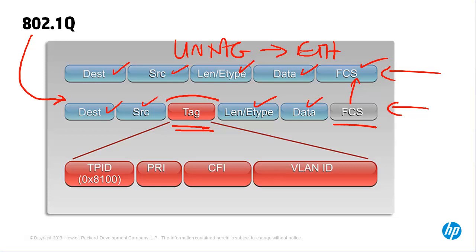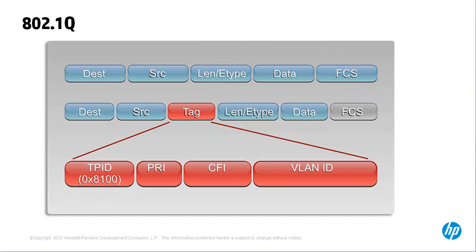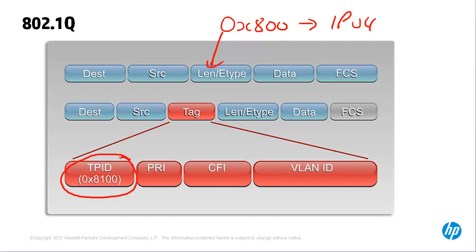The tag field consists of two main parts. We have the tag protocol identifier, which is set to 0x8100 in hexadecimal, and this identifies that the frame is an 802.1Q tagged frame. In standard Ethernet, 0x800 indicates the higher layer protocol is IPv4. However, in 802.1Q the frame has changed, so this identifier identifies that this is an 802.1Q frame. Switches receiving an 802.1Q frame know they need to treat the frame differently from a standard Ethernet frame.